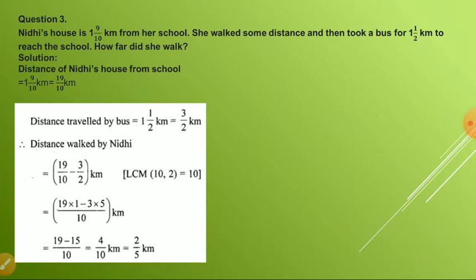Question number three: Nidhi's house is 1 whole 9/10 kilometer from her school. She walked some distance and then took a bus for 1 whole 1/2 kilometer to reach the school. How far did she walk? Imagine the total distance from house to school is 10 kilometers. You travel 5 kilometers by bus, and the rest by walking. To find the walking distance, you do total minus distance traveled by bus.